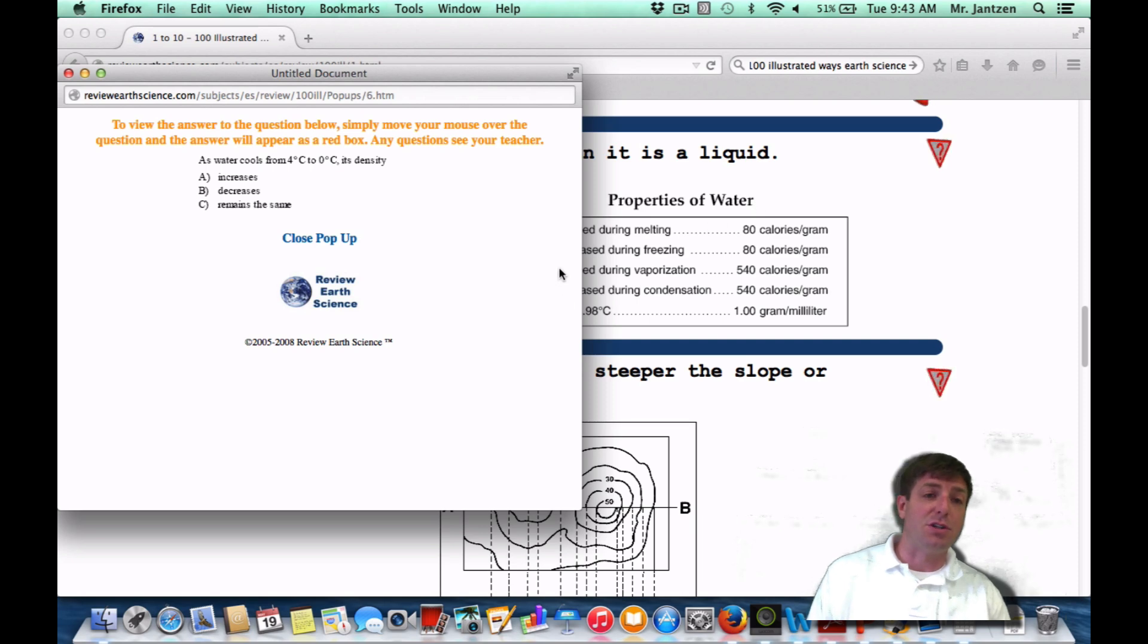If you were to see this as a Regents question, it says as water cools from four degrees to zero degrees, its density is what? Well, if it's most dense at four degrees, then as you go away from four degrees, what's going to happen to your density? Well, it's going to decrease.